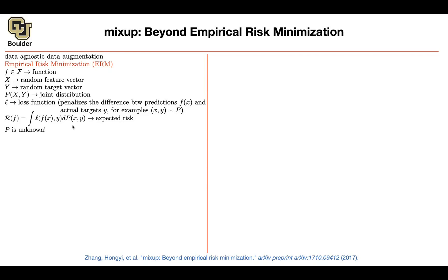The dimension of an image is its height times width times three — red, green, blue — so H × W × 3. These are high-dimensional data, and computing integrals in high dimensions is not easy. Even if you know P, you have Monte Carlo, but we don't know P to begin with, so that's one less problem.